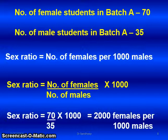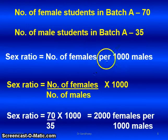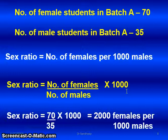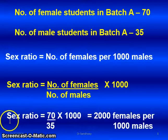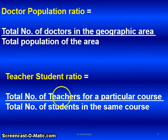Let's go through an example. Number of female students in batch A is 70; number of male students in batch A is 35. Sex ratio is number of females divided by number of males, multiplied by 1,000. So: 70 divided by 35, multiplied by 1,000 = 2,000 females per 1,000 males. Similarly, we can calculate the total doctor-population ratio as total number of doctors in a geographic area divided by total population, and the teacher-student ratio as total number of teachers divided by total number of students in the same course.